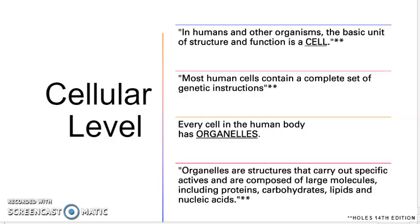The next level is the cellular level. The first thing that comes to mind is the smallest unit of life. Every living thing must have cells. Most human cells contain a complete set of genetic instructions — when you hear genetic instructions, think of chromosomes. When it comes to cells, there are two types: prokaryotes and eukaryotes. Inside the cell is a structure that holds very important things like the mitochondria, which is the powerhouse of the cell, the cytoplasm, and the nucleus if the cell has a nucleus.